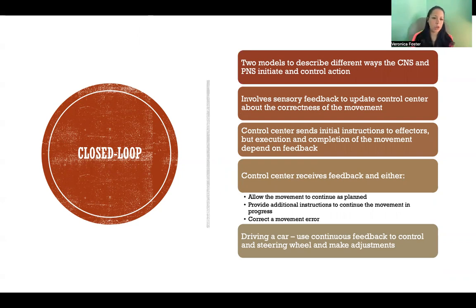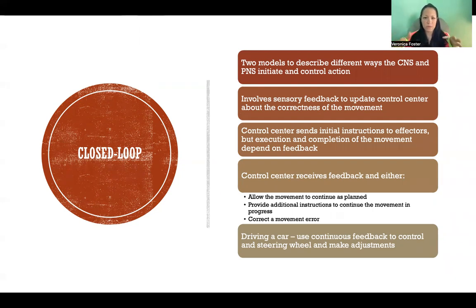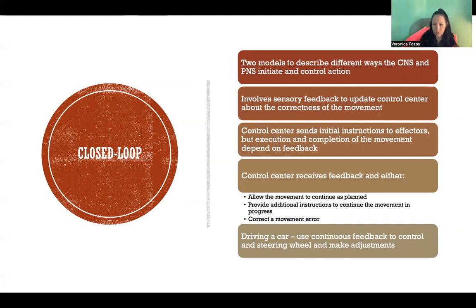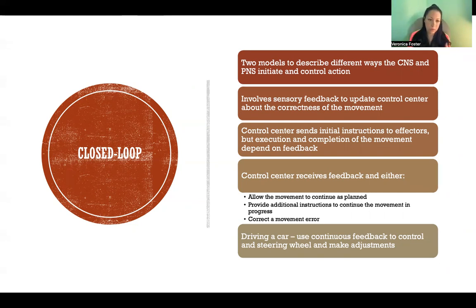Starting by describing closed-loop systems: closed-loop systems involve sensory feedback to update the control center about the correctness of the movement. The control center starts by sending out initial instructions to the effectors — in this case, the muscles — but the execution and completion of the movement depends on the sensory feedback that the brain, the cerebral cortex, and the cerebellum receive, so that we can update those instructions and send them back out to the effectors to correct and smooth out the movement.